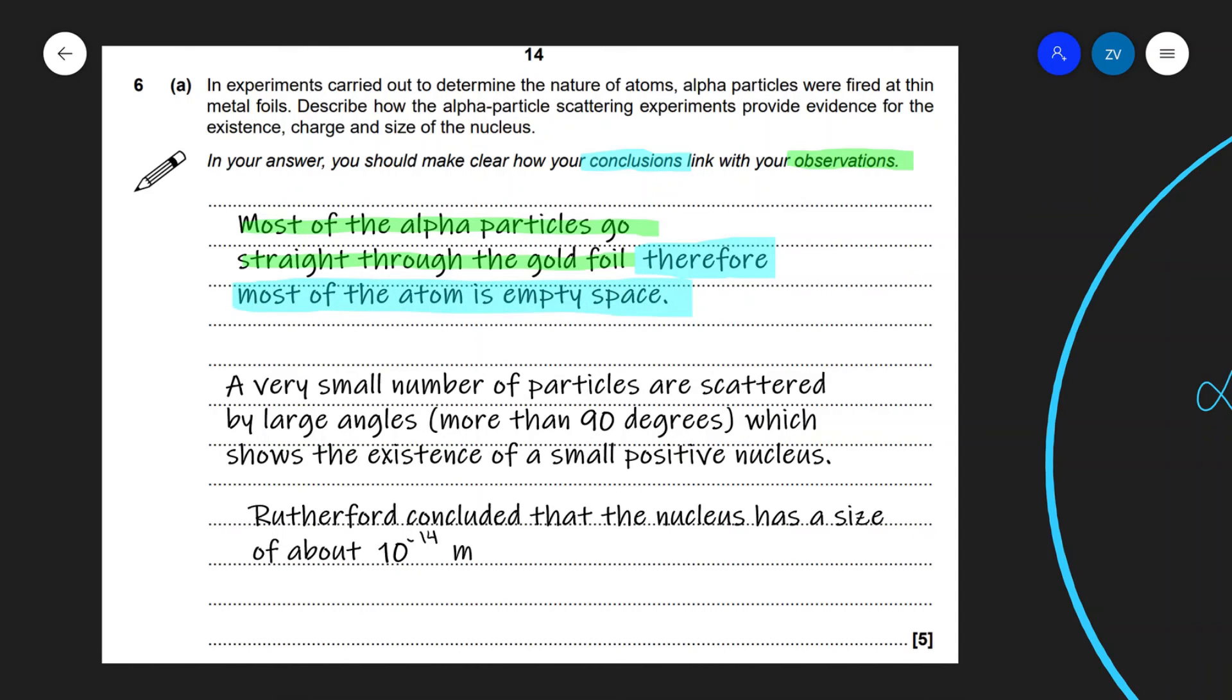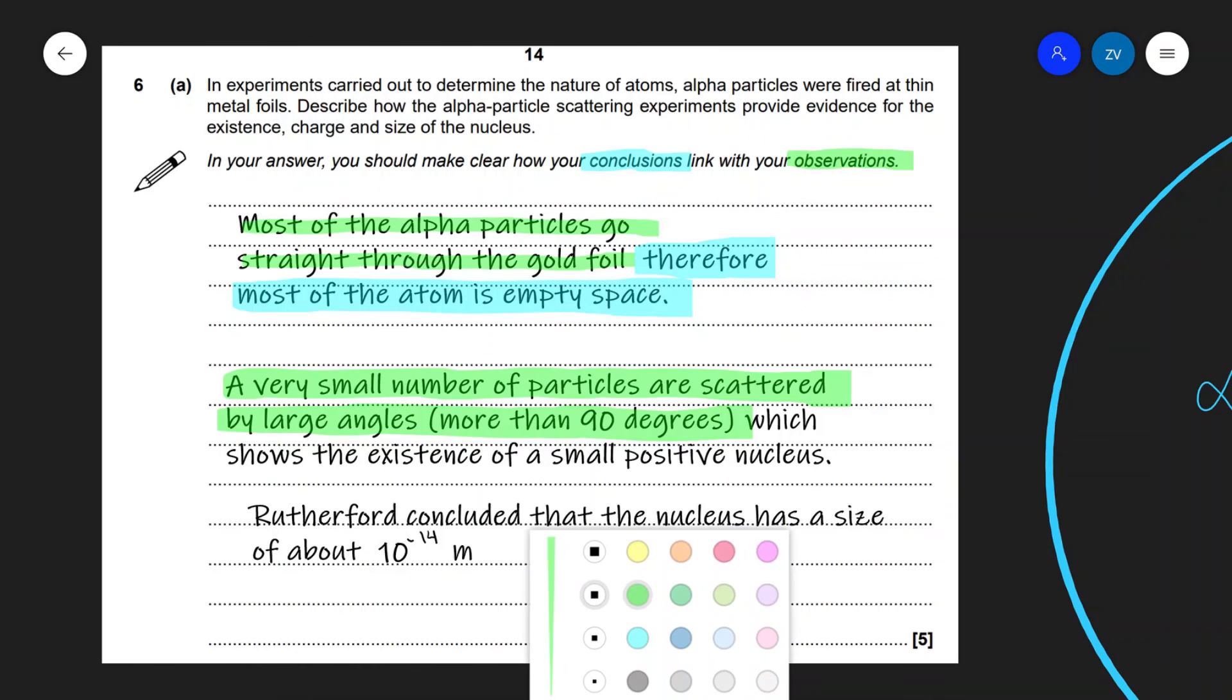Our next observation is that a very small number of the particles are scattered by large angles, meaning more than 90 degrees. And this, once again, is an experimental observation. So I'm just going to be highlighting this in green. And the conclusion that we can make from this experimental result is that the nucleus has to exist and it has to be small and it has to be positive as well.